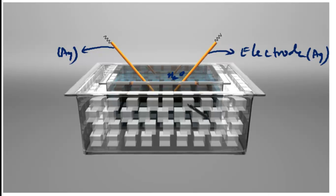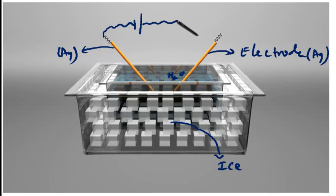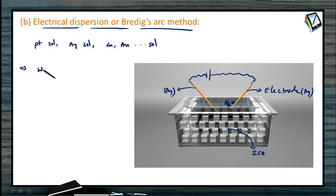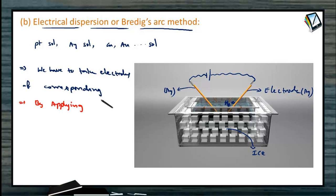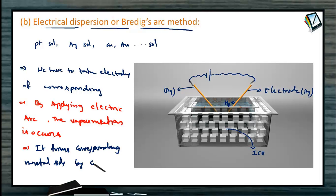The two electrodes are immersed in a dispersing medium such as water, and the setup is surrounded by ice cubes. A large electric arc is created by applying heavy voltage and current. The electrodes suddenly vaporize — the metal becomes vapor — and this vapor is suddenly cooled in the water, forming the corresponding sol. The condensation of metals takes place: the metal vapor is immediately condensed into the water, forming the corresponding metal sol.